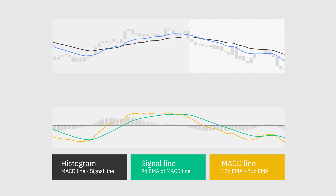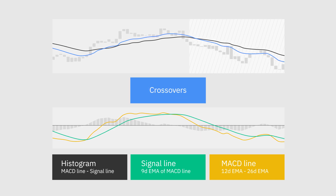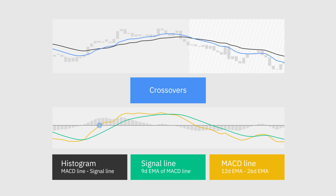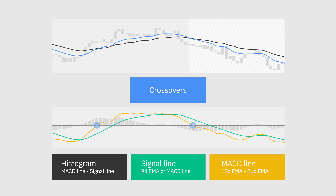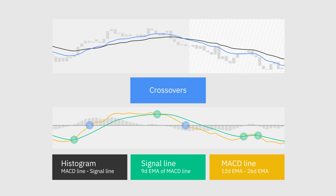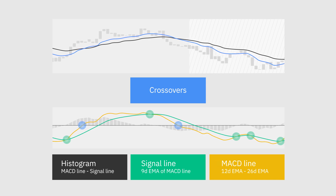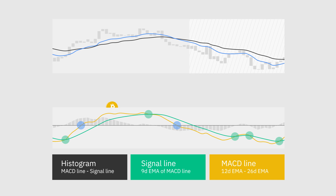The relevant signals of the MACD indicator are related to the so-called crossovers, which happen when the MACD line crosses above or below the center line, or above or below the signal line. Keep in mind that both center line and signal line crossovers may happen multiple times, producing many false and tricky signals, especially in regards to volatile assets such as cryptocurrencies.